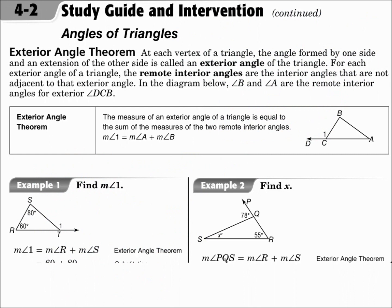The Exterior Angle Theorem says that the exterior angle is the sum of the remote interior angles. If you look at the picture, angle one is an exterior angle — you extend a side, and the angle outside the triangle is the exterior angle. The two remote interior angles are the two angles of the triangle on the other side, not the one adjacent to the exterior angle. The exterior angle is the sum of the remote interior angles.